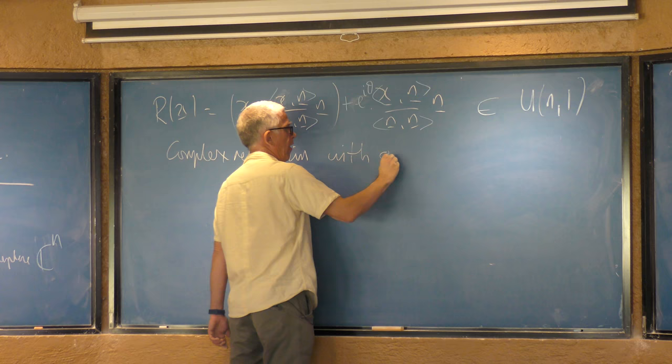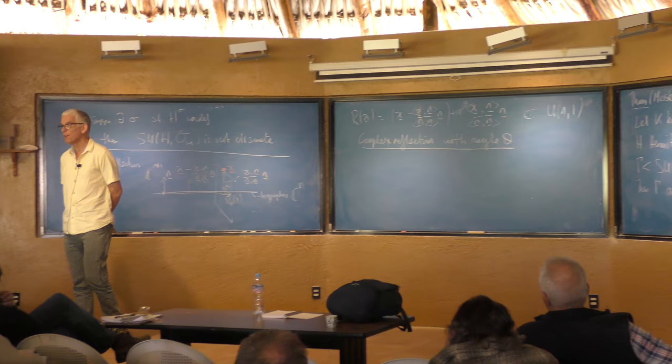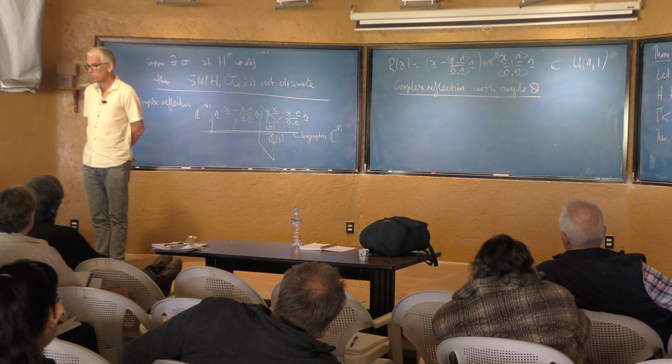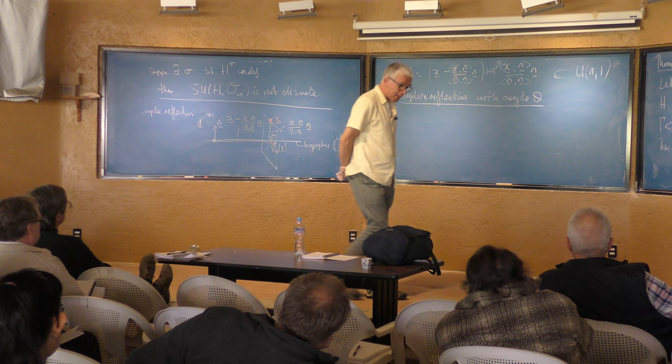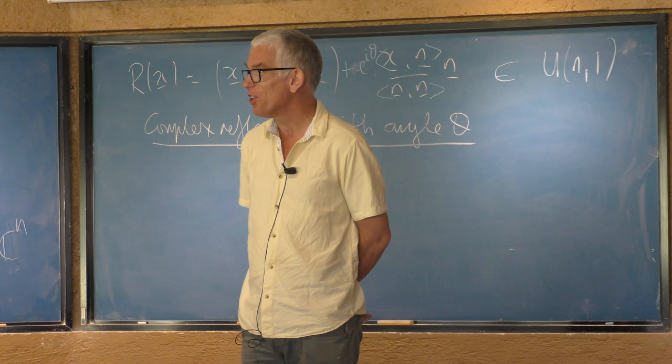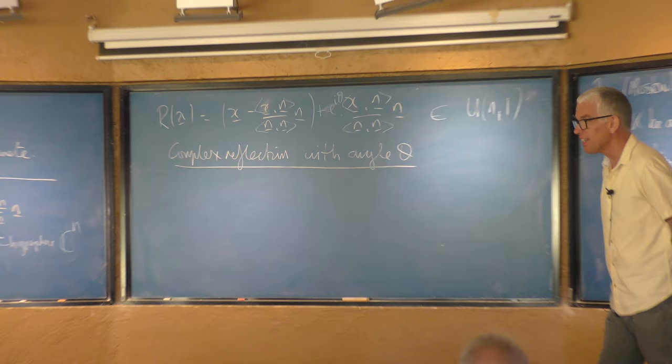You might object that reflections should always have order two, and if the angle is not equal to π then this doesn't have order two — in particular it could have infinite order if θ were an irrational multiple of π. I agree it's not very satisfactory, but it's a convention used by Shephard and Todd when classifying finite groups generated by complex reflections back in the 1950s. There's nothing I can do to change this, so you'll just have to forgive me. I'll also call the fixed hyperplane the mirror of the complex reflection.